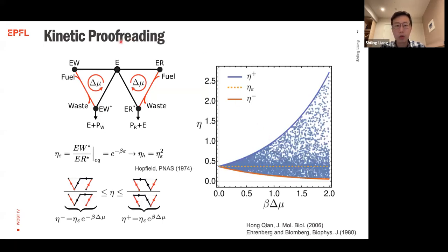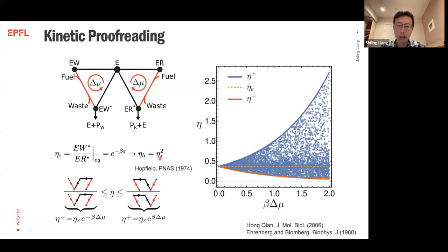The first application is kinetic proofreading. In this setting, the system is driven out of equilibrium by a cycle. Without this driving force — if we cut the two driving edges — discrimination falls back to purely energetic discrimination, giving too high an error rate for real biological systems. Hopfield's kinetic proofreading scheme introduces a cycle that uses energy to lower the error rate. In the Hopfield scheme the external driving transitions are unidirectional, meaning energy consumption is effectively infinite.